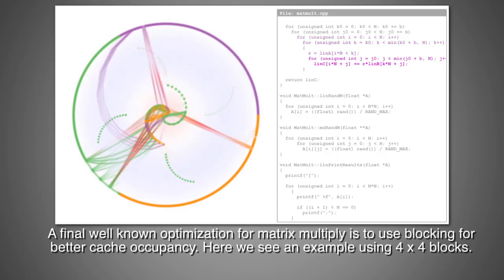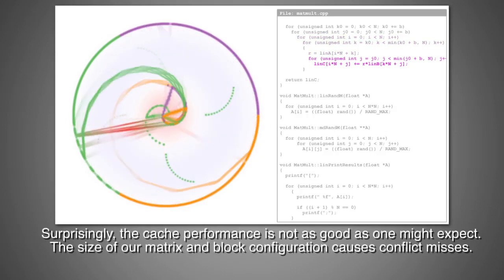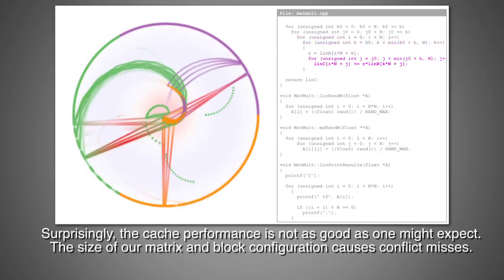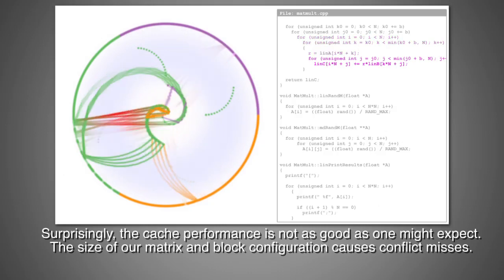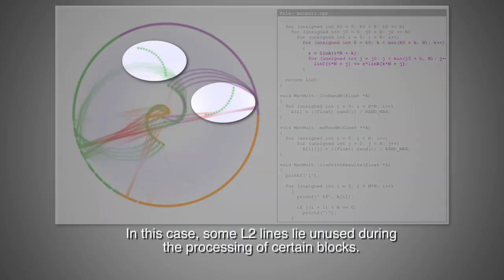Here we see an example using 4x4 blocks. Surprisingly, the cache performance is not as good as one might expect. The size of our matrix and block configuration causes conflict misses. In this case, some L2 lines lie unused during the processing of certain blocks.